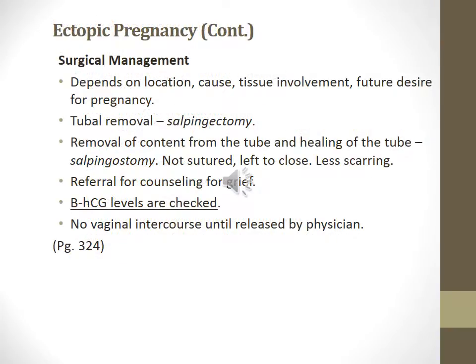Surgical management of ectopic pregnancy depends on the location, cause, tissue involvement, and future desire for pregnancy. A salpingectomy is removal of the tube. Salpingostomy is removal of the contents from the tube with the tube left to heal — no suture, left to close with left scarring. Provide referral for grief counseling. Check beta-hCG levels. No vaginal intercourse until released by the physician. This information is on page 324 of your textbook.